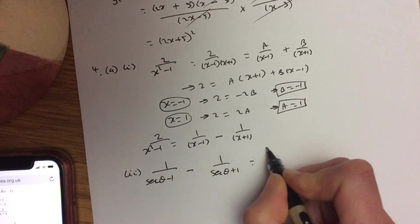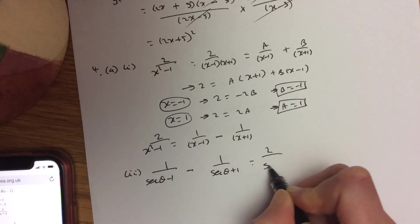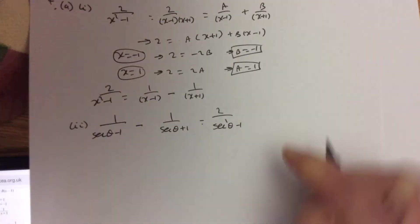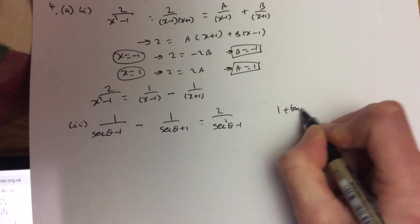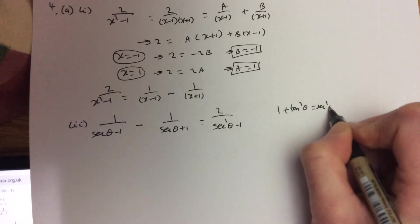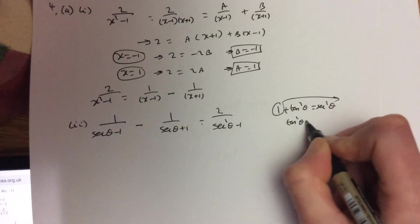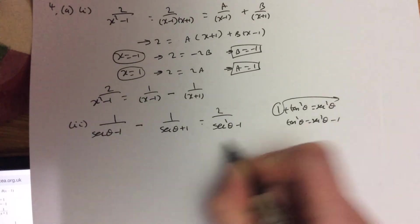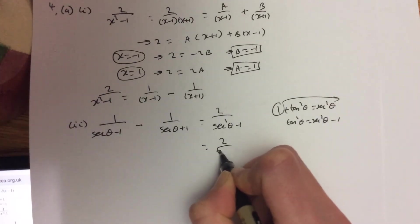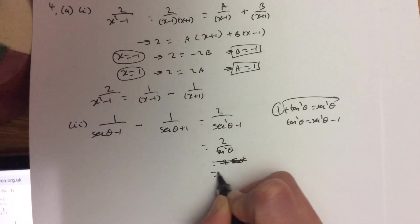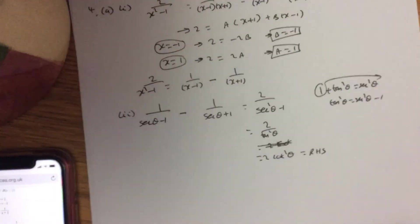So up here, it equals, instead of x, I've got 2 over sec squared minus 1. And you can remember your trig identities: 1 plus tan squared equals sec squared. So if I bring that over, tan squared is sec squared minus 1. So that's 2 over tan squared, which is 2 over tan squared is 2 cot squared, which is your right-hand side, which is what you want it to do.